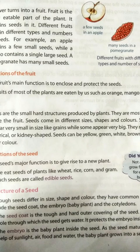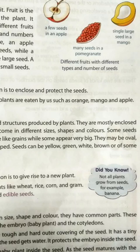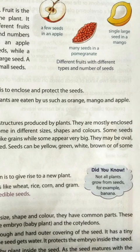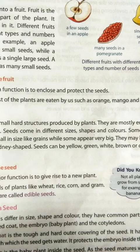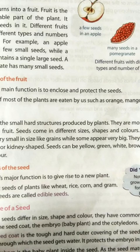Different fruits contain different numbers of seeds. For example, look at the picture — a few seeds in an apple, many seeds in a pomegranate, and only a single large seed in a mango. So different types of fruit have different types of seeds.